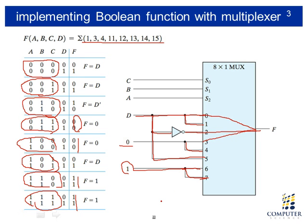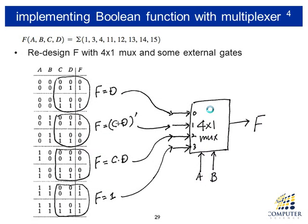Another technique with more practical value is designing the Boolean function with a smaller-size multiplexer. For a four-variable function, we previously used a multiplexer with three selection signals. Another technique is to design the four-variable Boolean function with only a two-selection-signal multiplexer by adding some external gates on the input side of the multiplexer.